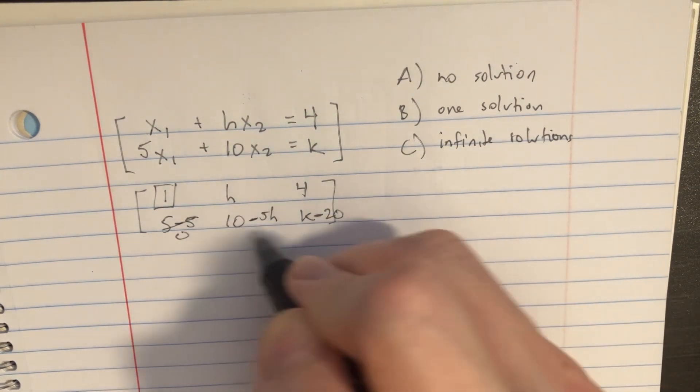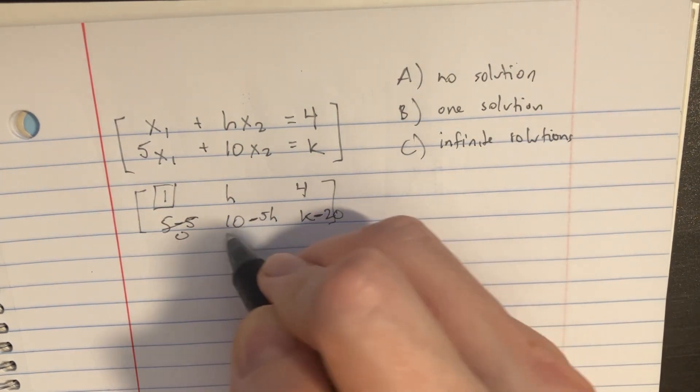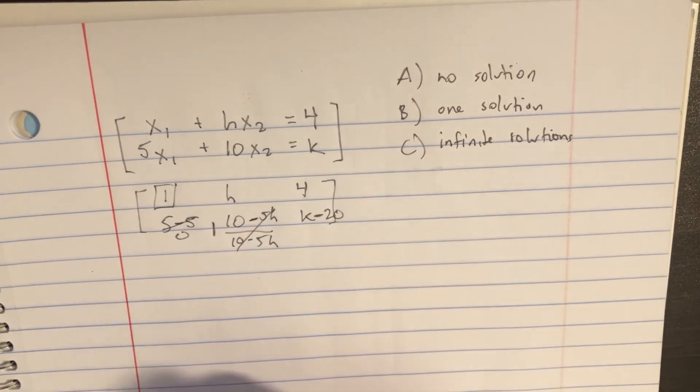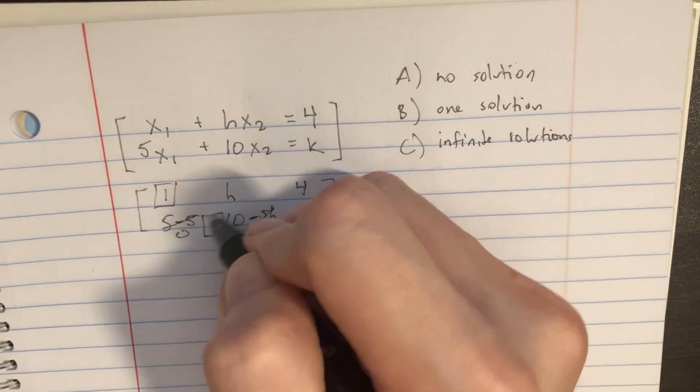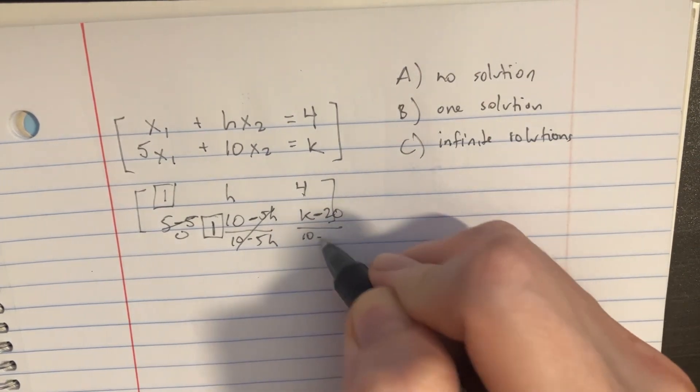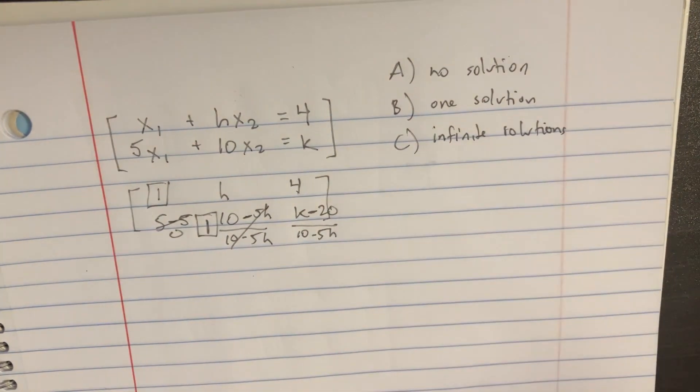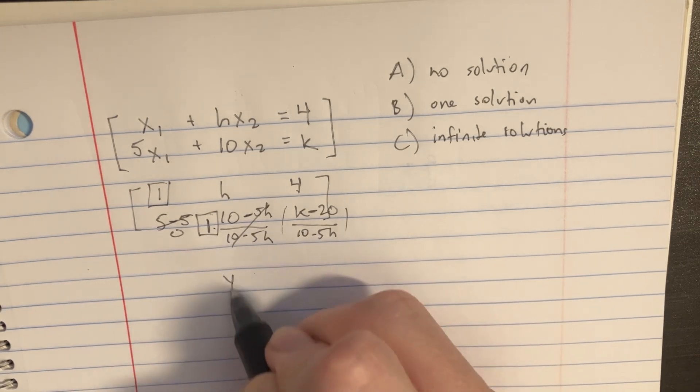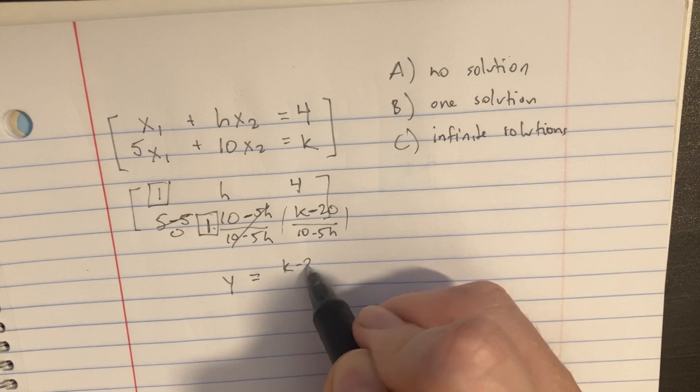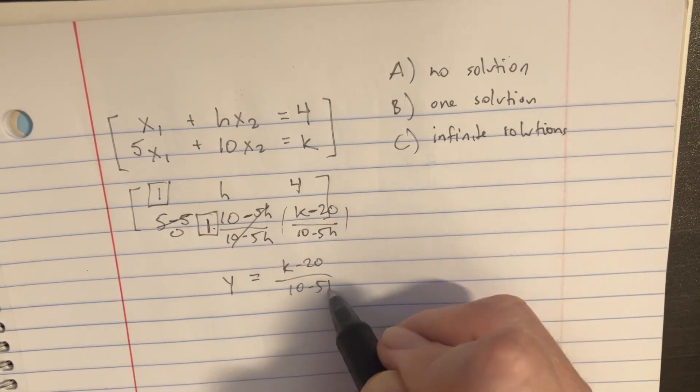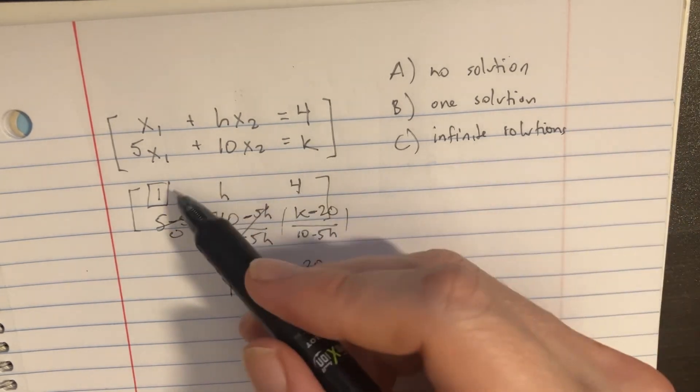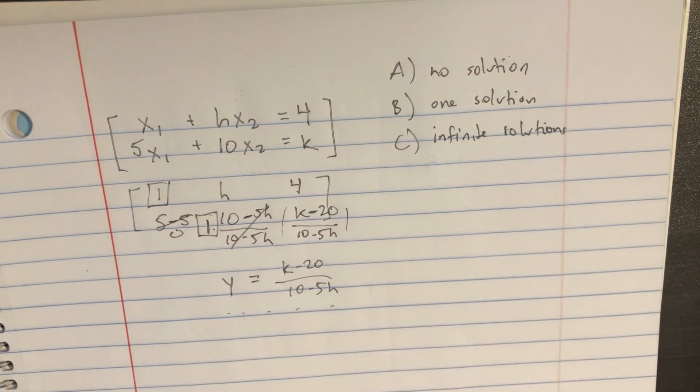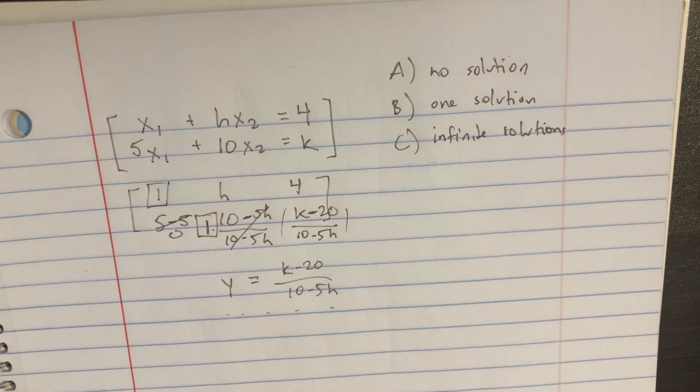So if we wanted to make this a pivot, we would have to divide this by 10 minus 5h. This would cancel out and become a 1 right here, which would become our next pivot. And of course, we have to continue that by doing that over here as well. We're getting this equation on this side that says y equals k minus 20 over 10 minus 5h. We can deal with this top row, but let's just ignore it for now because this is all the information we need to solve this.